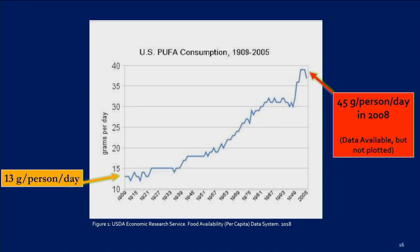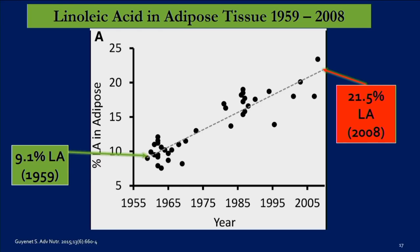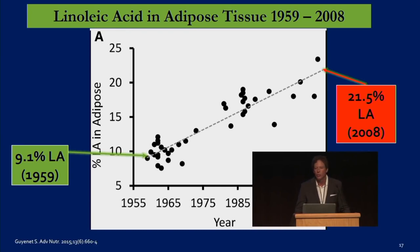Here's PUFA consumption — omega-6 and omega-3 together — from our own USDA: 13 grams a day in 1909, rising to 45 grams a day by 2008. That's a more than tripling of our PUFAs. What does this do to us? These omega-6s accumulate in our fat tissue. Stephan Guyenet compiled 37 studies that looked at linoleic acid — the omega-6 — in human adipose tissue from 1959 to 2008. In 1959 it was 9.1%; by 2008 it reached 21.5%. The 9.1% in 1959 was already far too high — it should be more like 4%.